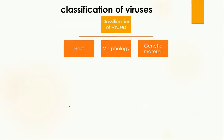Viruses are generally classified into three categories: on the basis of their host, their morphology — morphology means their shape or structure — and their genetic material. Let's study these one by one.